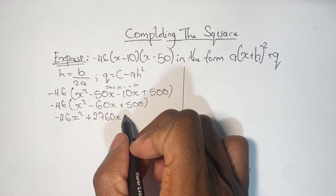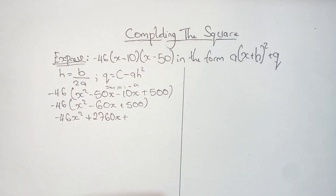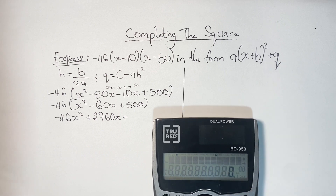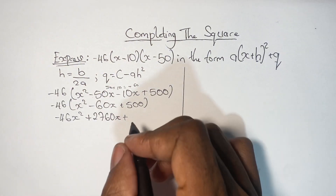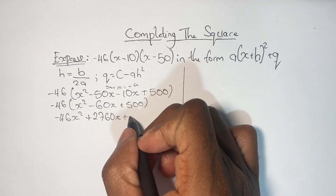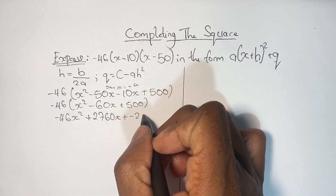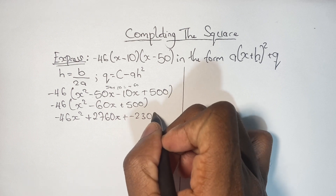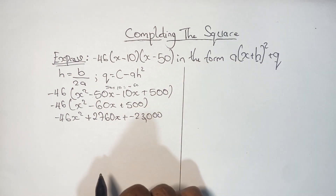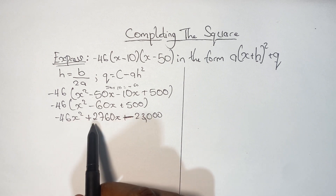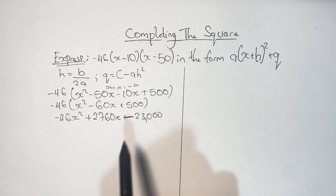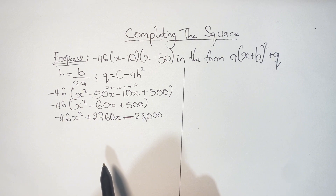Now we have to multiply negative 46 and 500. Negative 46 times 500 gives us negative 23,000. A positive and a negative gives us a negative, so we have negative 23,000. So now we have negative 46X² plus 2760X minus 23,000.